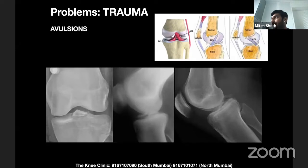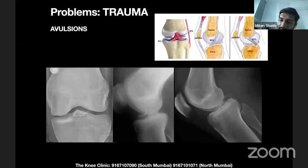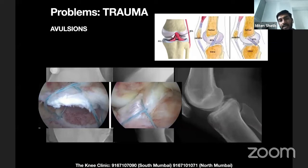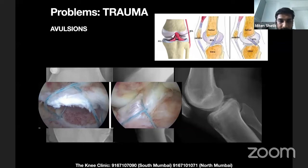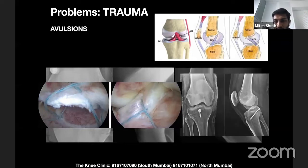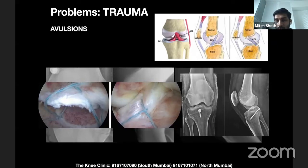ACL and PCL avulsions are actually better picked up and classified on X-rays than MRI. For ACL avulsions we use a classification called the McEiver classification — the modified McEiver classification is better represented by X-ray than MRI, so surgical decisions rely on it. Arthroscopically, we fix these with a suture bridge fixation, pulling the bone fragment back in place without opening the patient. The same applies to PCL avulsions, which can now also be done arthroscopically with suture bridge fixation.